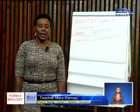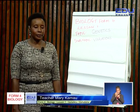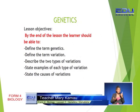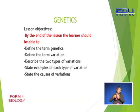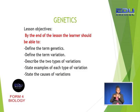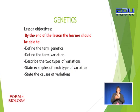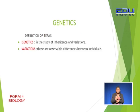Our lesson objectives are: number one, define the term genetics — by the end of the lesson, the learner should be able to define the term genetics. Number two, define the term variation — by the end of the lesson, the learner should be able to describe the two types of variations, state examples of each type of variation, and also state the causes of variations.